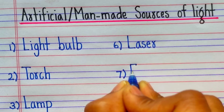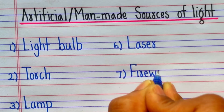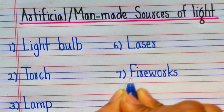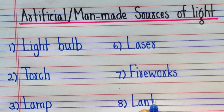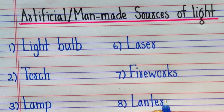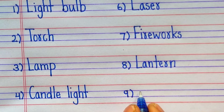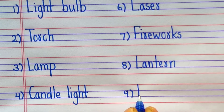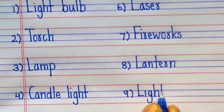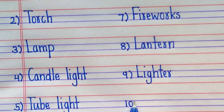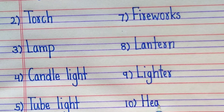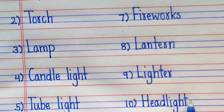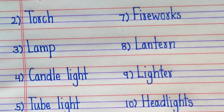Seventh one is fireworks — F-I-R-E-W-O-R-K-S. Eighth one is lantern — L-A-N-T-E-R-N. Ninth one is lighter — L-I-G-H-T-E-R, lighter. Tenth one is headlights — H-E-A-D-L-I-G-H-T-S, headlights. Thank you.